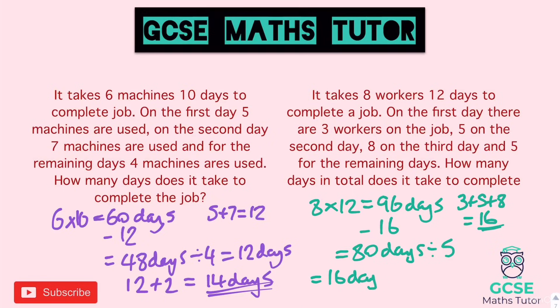80 divided by five is 16 days, but don't forget we also have the initial three days, so adding three gives us 19 days in total.